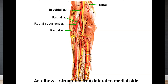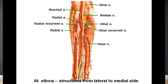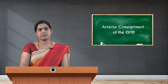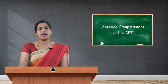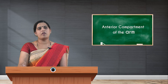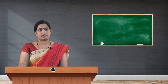At the elbow, the structures from lateral to medial are: the radial nerve, then the tendon of biceps brachii, then the brachial artery, and medially the median nerve. The musculocutaneous nerve from the lateral cord is the nerve of the compartment. Except for the lateral half of brachialis, all muscles are supplied by the musculocutaneous nerve. The median nerve is seen in the front of the arm but gives no muscular branches there. The ulnar nerve passes behind the medial epicondyle and enters the medial forearm, where it gives muscular branches.